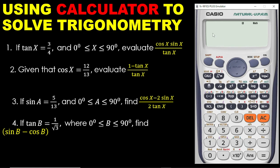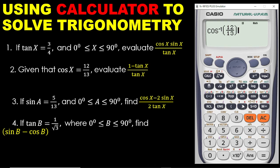To get cos inverse, simply press Shift and then press cos. Now you are seeing cos inverse. The cos value is 12 over 13, which is a fraction, so you press the fraction button. Enter 12 on top, go down and enter 13. Move the cursor up by clicking the right arrow, then close the bracket.